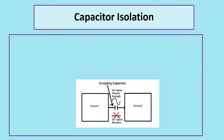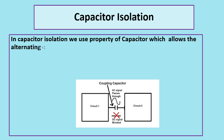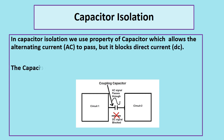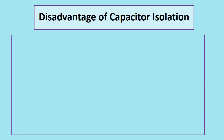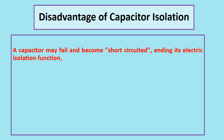Capacitor isolation. In capacitor isolation, we use the property of a capacitor which allows alternating current (AC) to pass but blocks direct current (DC). Capacitors can be used to couple AC signals between circuits at different voltages. A disadvantage is that a capacitor may fail and become short circuited, ending its electric isolation function, which creates a risk to connected circuits and possibly causing human danger.